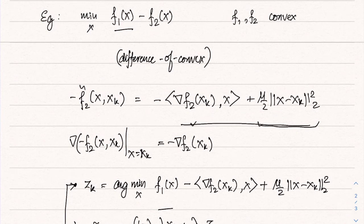A similar construction holds when there are constraints that are differences of convex functions — in other words, concave functions appearing in constraints of the form g_i(x) ≤ 0.